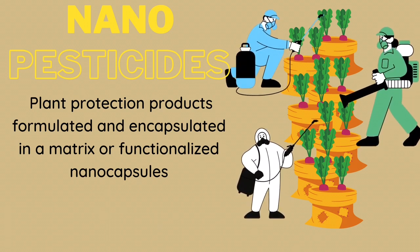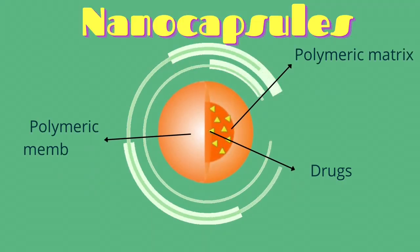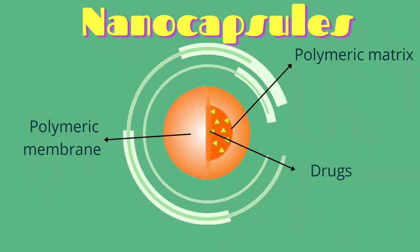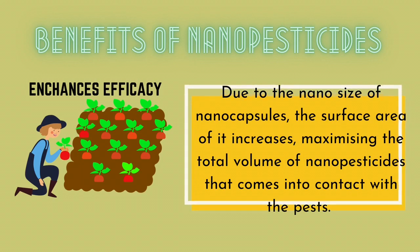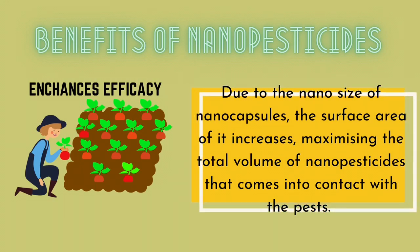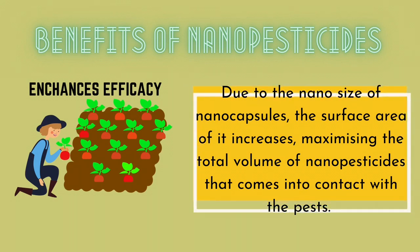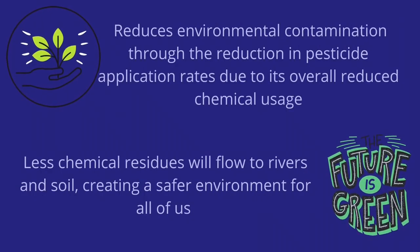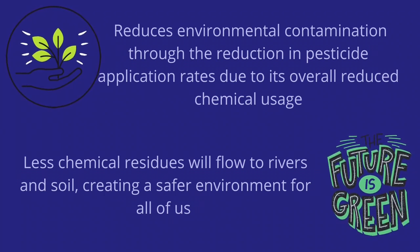Lastly, nanopesticides are plant protection products formulated and encapsulated in a matrix or functionalized nanocapsules. Nanocapsules are nanomaterials that mainly consist of a polymeric membrane and polymeric matrix in the inner core, which contains the active compounds of the pesticides. Nanopesticides' main benefit is enhanced efficacy — due to the nano-size of nanocapsules, the surface area increases, maximizing the total volume of nanopesticides that comes into contact with the pests. Besides that, nanopesticides reduce environmental contamination through reduced pesticide application rates and overall reduced chemical usage, so less chemical residue flows to rivers and soil, creating a safer environment.